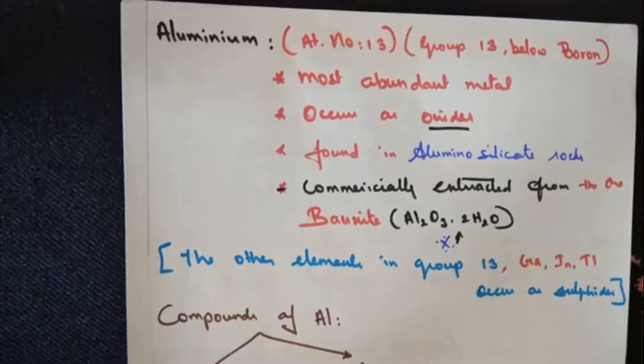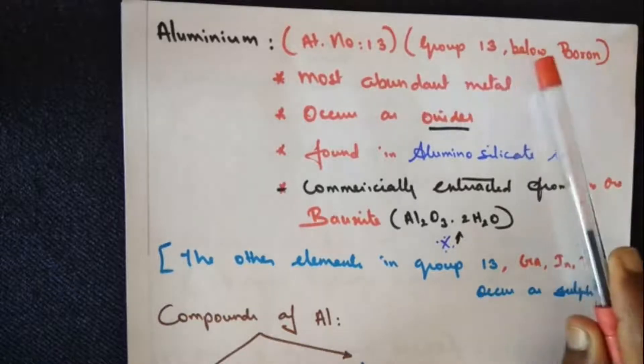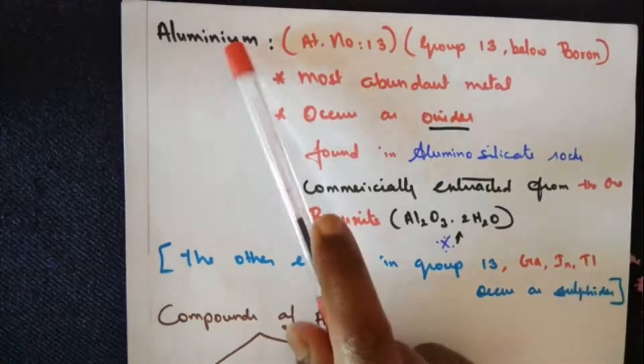Good wishes dear students. In today's class we will learn about another element of group number 13 that is placed below boron - aluminium.